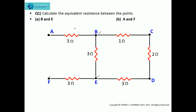In order to solve this question and find the equivalent resistance, first of all we have to take into consideration the current entering the circuit and the current leaving the circuit. If we consider that the current I is entering the circuit at point A, it moves and reaches point B. This point is known as a junction — a point where the current divides. So as current I enters at point A and reaches point B, it gets divided at point B into I1 and I2.